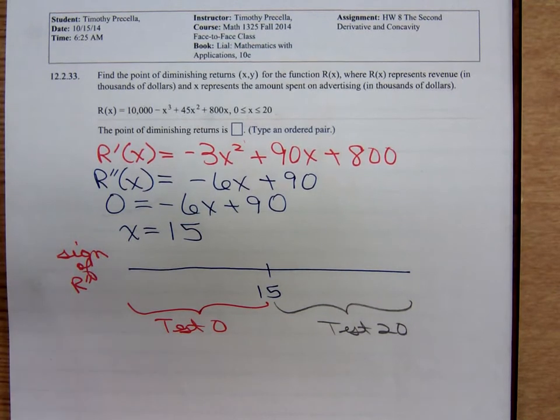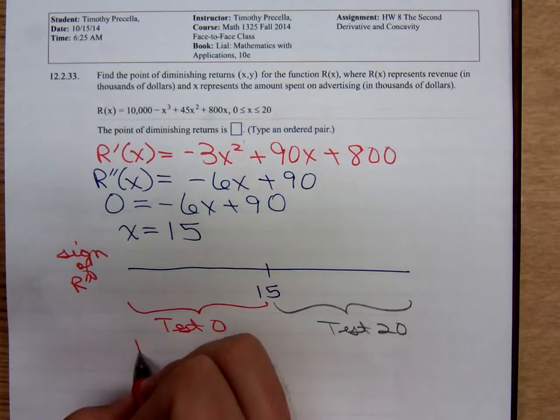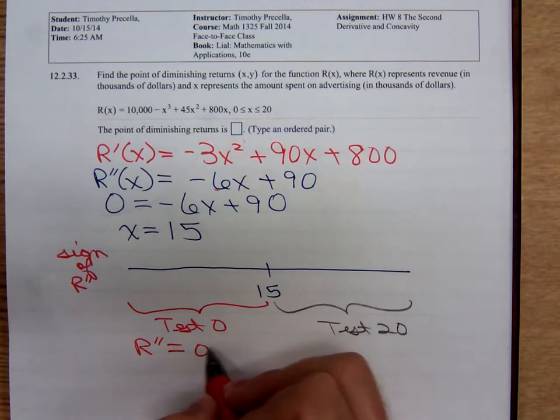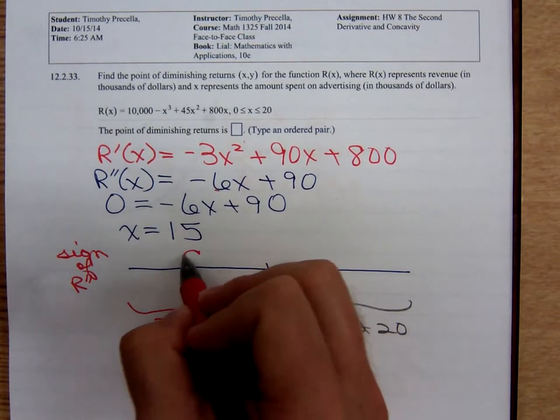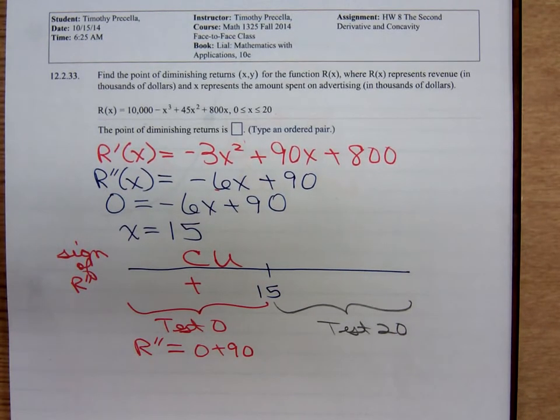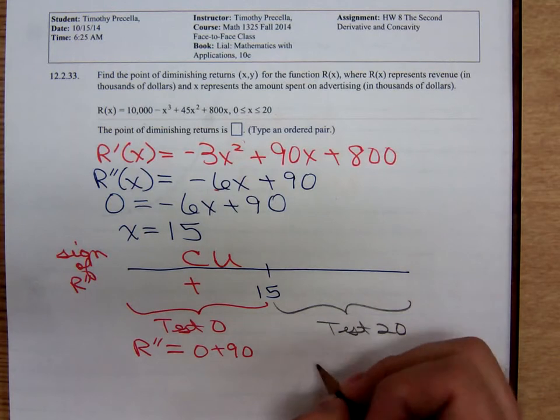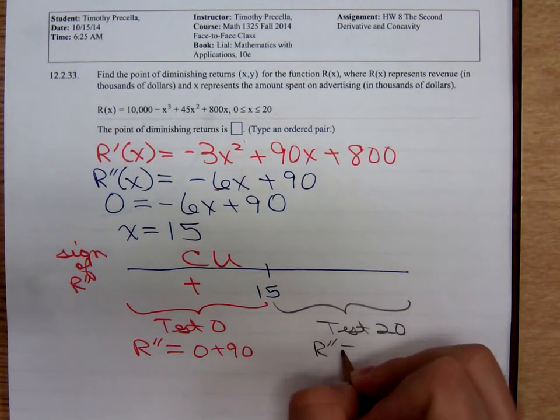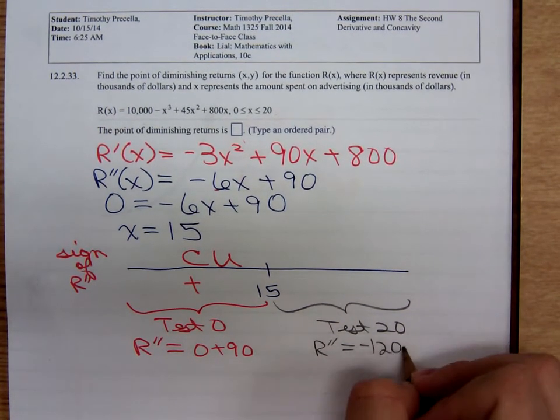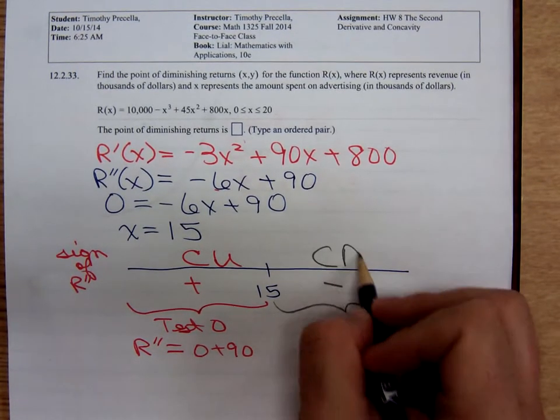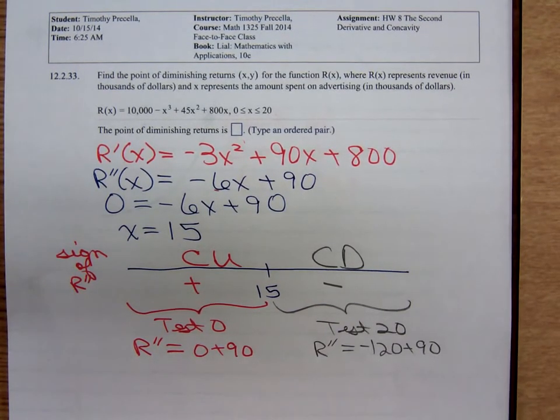Testing 0, we get R double prime equals 0 plus 90. Sure enough, that's positive. So, the graph is concave upward. And, at 20, we get R double prime is equal to negative 120 plus 90. That's negative. So, concave downward. So, we do have a point of diminishing returns.